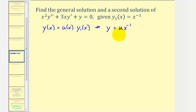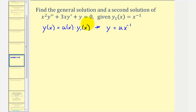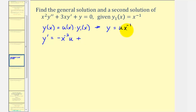Because we're assuming this is a solution, we'll now find y prime and y double prime, then perform substitution into the differential equation. Finding y prime requires the product rule: the first function u times the derivative of x to the negative one gives negative x to the power of negative two times u, plus the second function x to the negative one times u prime.